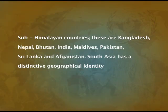South Asia consists of sub-Himalayan countries: Bangladesh, Nepal, Bhutan, India, Maldives, Pakistan, Sri Lanka and Afghanistan. South Asia has a distinctive geographical identity — we have the mighty Himalayan mountain range in the north, and three water bodies to the south: the Bay of Bengal, the Indian Ocean and the Arabian Sea. These geographical features provide a natural boundary to the South Asian region. The boundaries between north and south are more clear-cut compared to boundaries in the east and west.